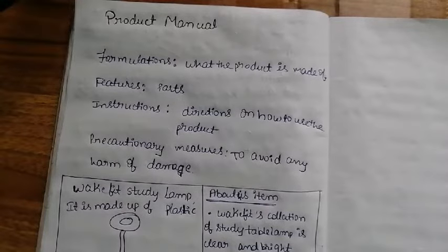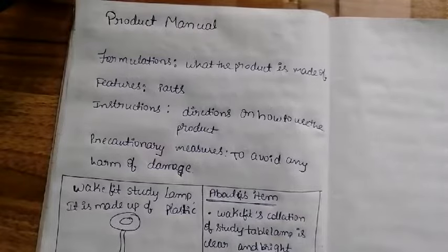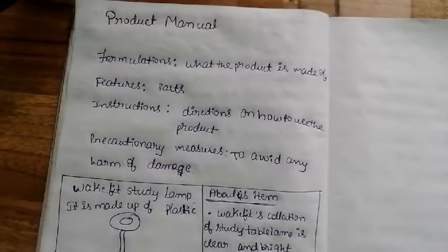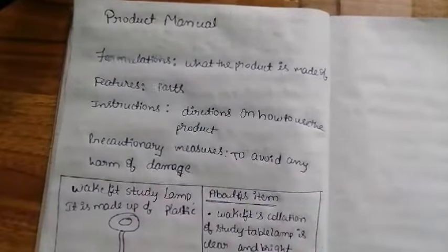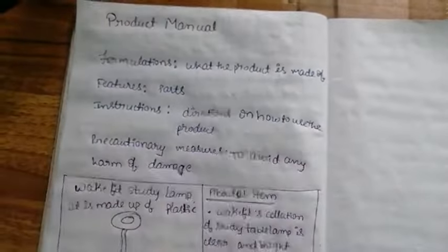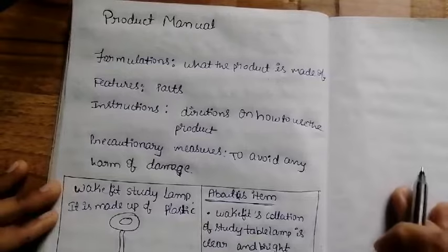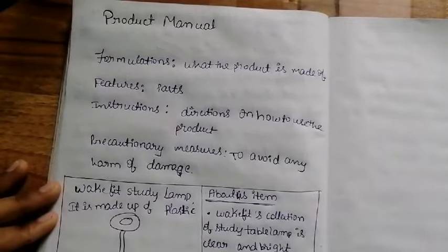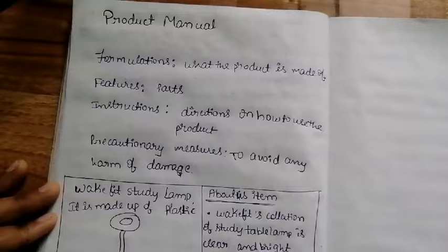Hi friends, in this video let us see a week of English grammar - product manual. A product manual has headings and contents. The formulations explain what the product is made of. First is formulation, where you write what the product is made of, like metal, rubber, wood, or plastic.